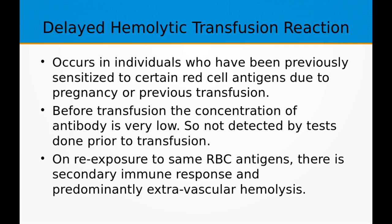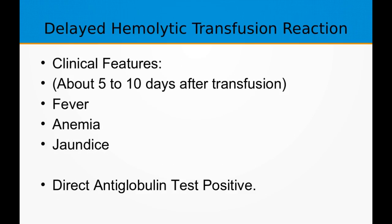Moving on to delayed complications, delayed hemolytic transfusion reaction occurs in individuals previously sensitized to certain red cell antigens due to pregnancy or previous transfusion. However, before the subsequent transfusion the concentration of those antibodies is very low and not detected by pre-transfusion tests. On re-exposure to the same red blood cell antigen, there is a secondary immune response resulting in predominantly extravascular hemolysis. Clinical features seen 5 to 10 days after transfusion include fever, anemia, and jaundice. The direct antiglobulin test will be positive.